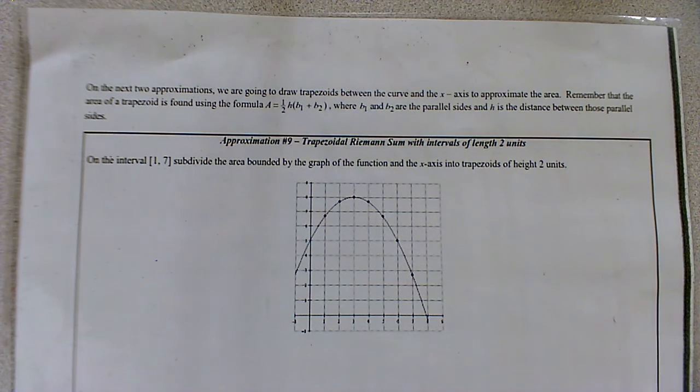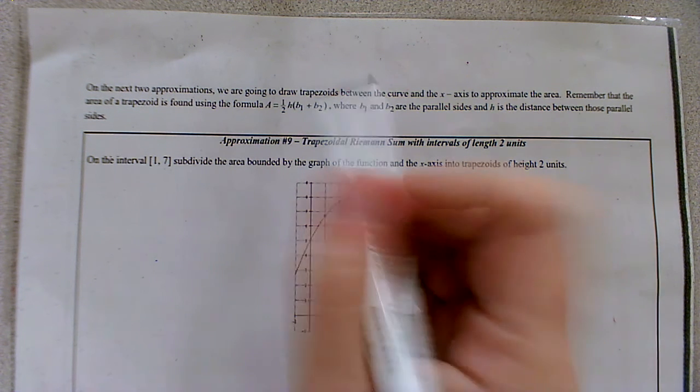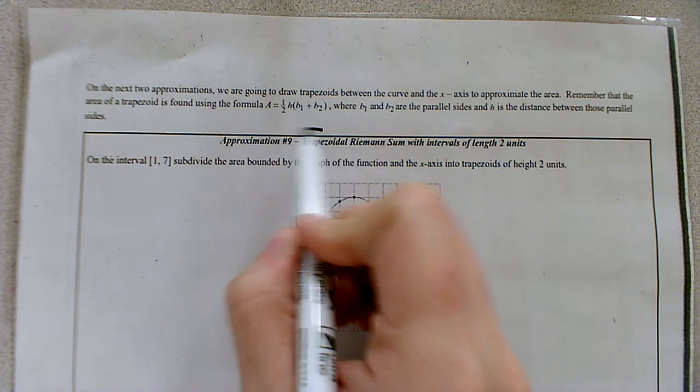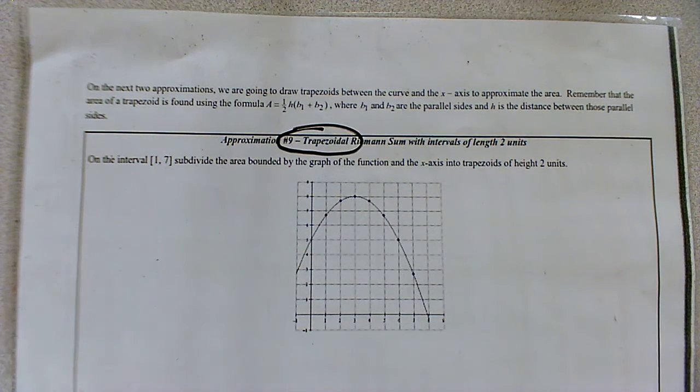All right, so for our last type of Riemann sum calculation, instead of using a rectangle, which we've seen in the previous three examples with the left point, right end point, and midpoint, we're going to use a different geometric shape this time to see if we can get a little bit more accuracy, and this time we're going to use a trapezoid.